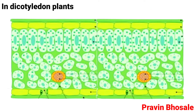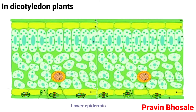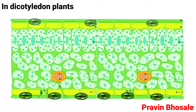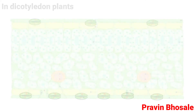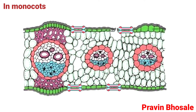In dicotyledon plants, the leaf shows a greater number of stomata on the lower epidermis and fewer stomata on the upper epidermis, whereas in monocotyledons there are equal numbers of stomata on the upper and lower epidermis.